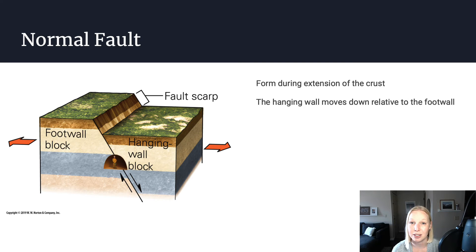The first type of fault I want to talk about is called a normal fault. These faults tend to form during extension of the crust when you're stretching and pulling apart the crust. We see a lot of normal faults in the basin and range province where we have active extension of the crust.